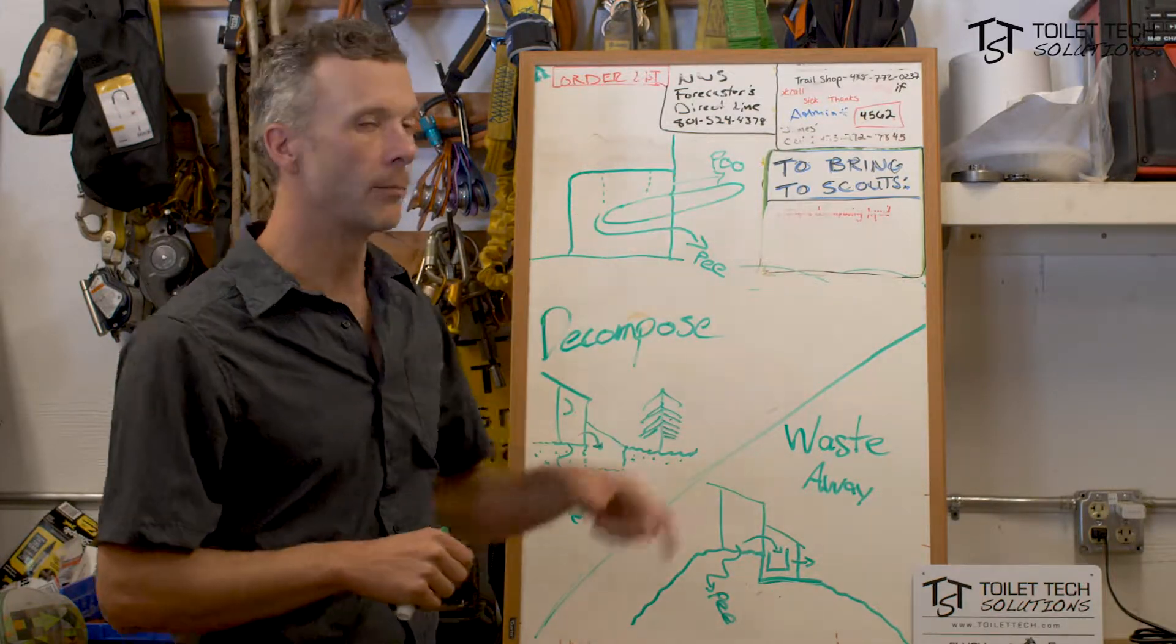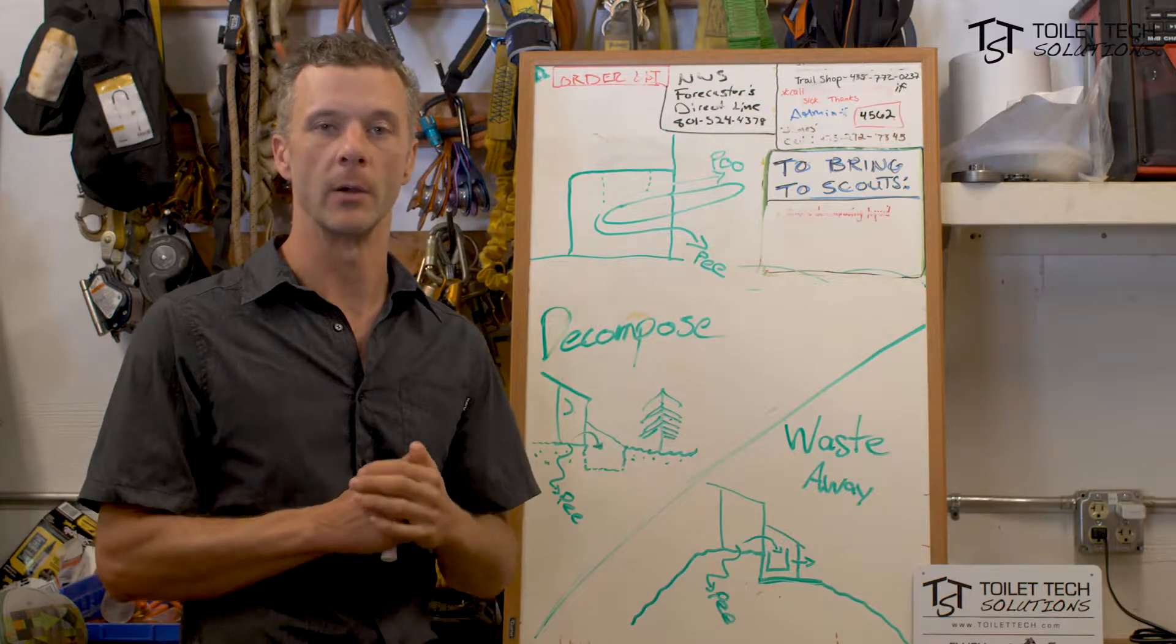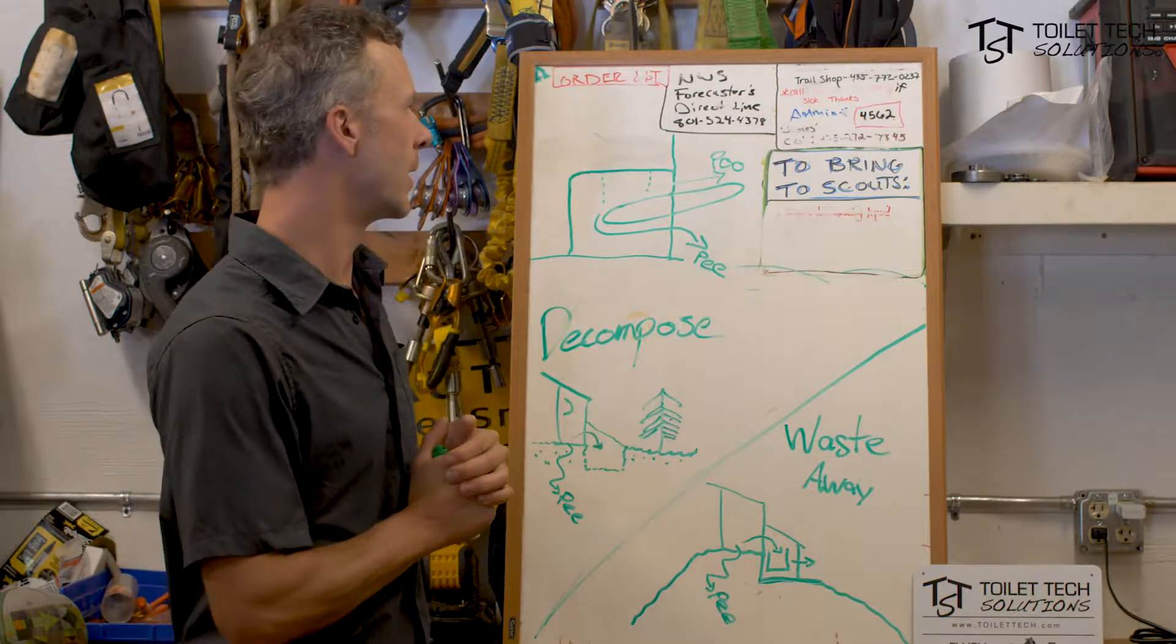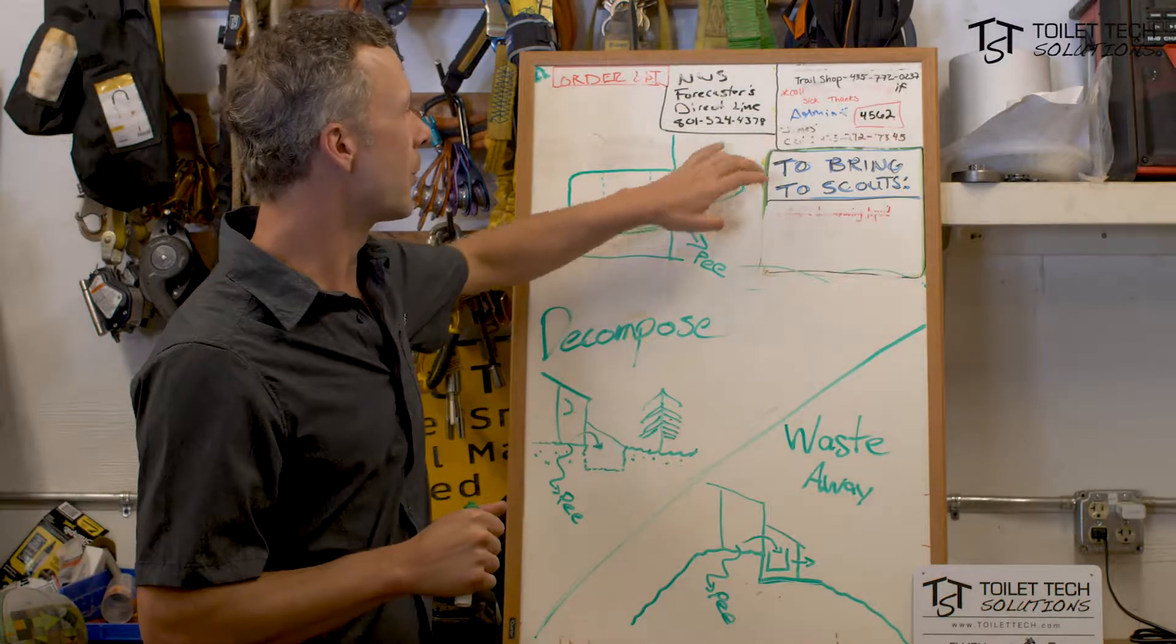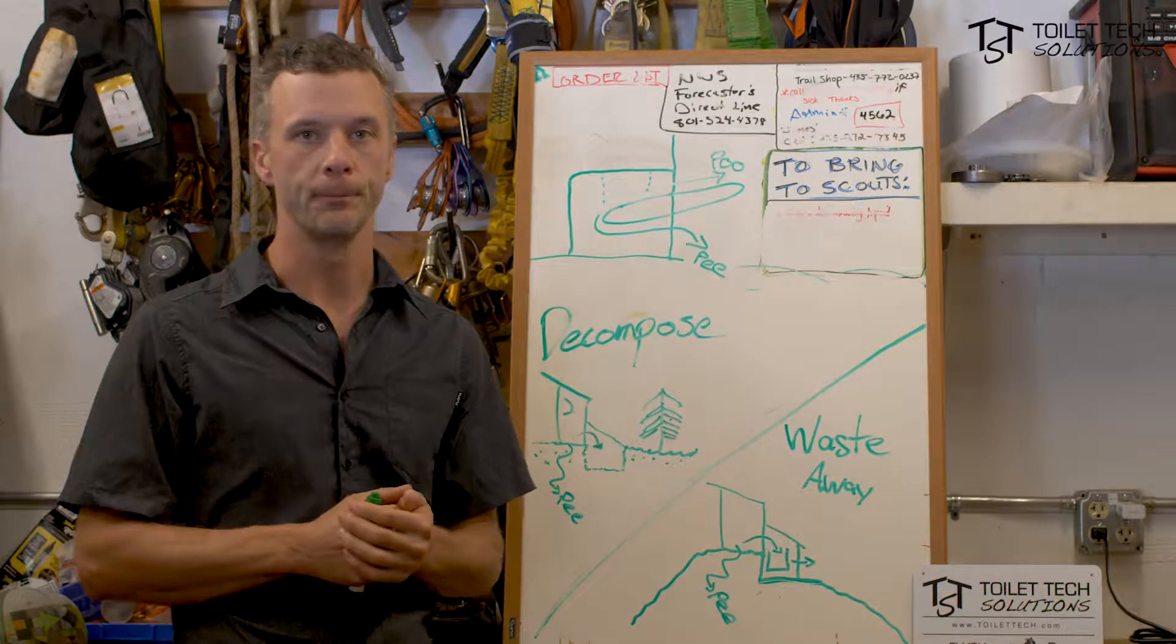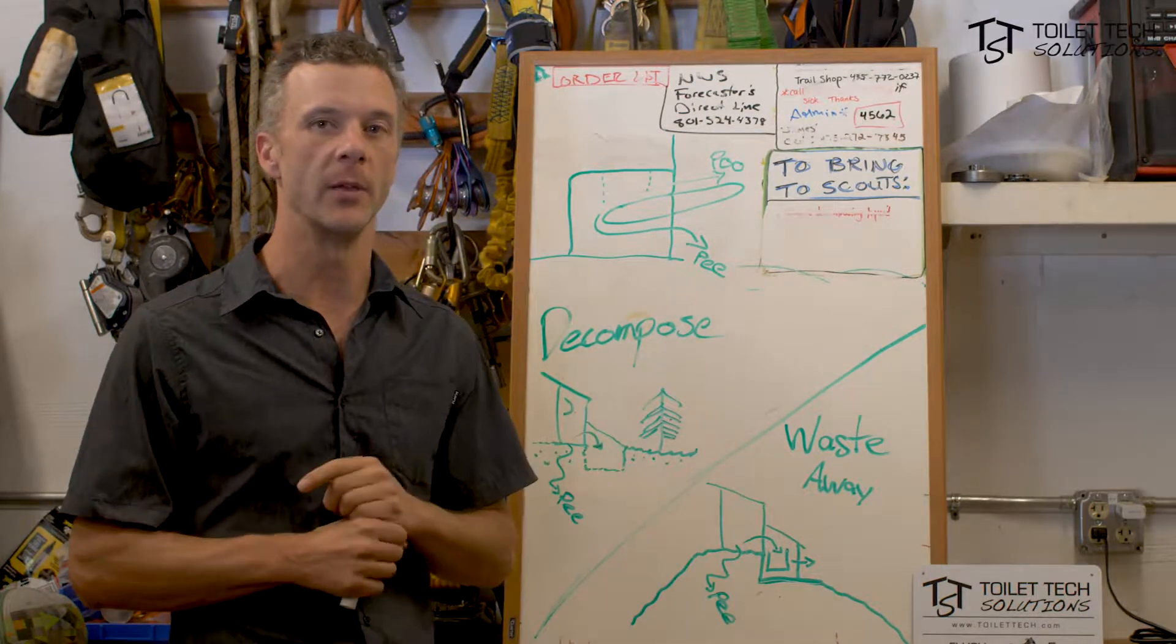Poo goes up the conveyor belt with the toilet paper and other junk that some people tend to put into toilets, and it goes up and drops off the conveyor belt. Now it can go at least two places.